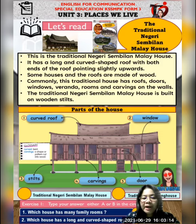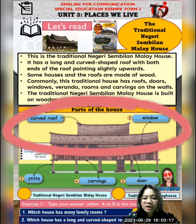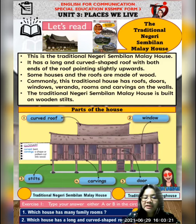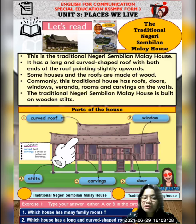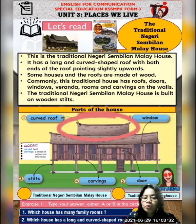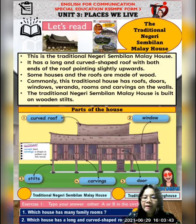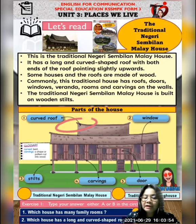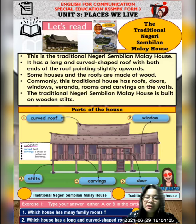Lebih kurang sama kalau kamu lihat part of the house dia. Dikatakan rumah traditional Negeri Sembilan ini ada long and curved-shaped roof. Maksudnya dia ada bumbung yang panjang dan curved - melengkung. Dia ada bumbung yang melengkung. Kemudian, ends of the roof pointing slightly upwards - maksudnya dekat hujung bawah ni, dia akan macam pointing upwards, iaitu tajam ke atas. Dia melengkung ke atas. Slightly tu maksudnya lebih kurang. Nampak dia melengkung ke atas.